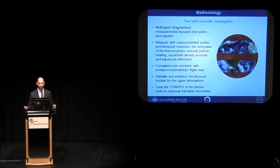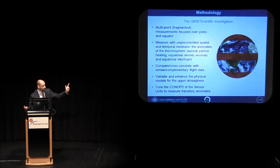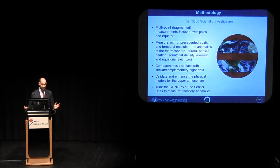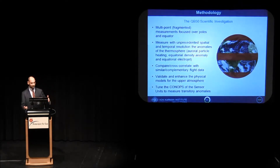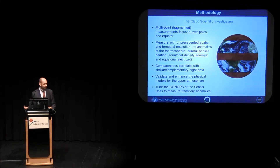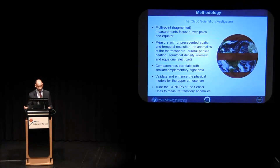What are the main scientific objectives of QB50? We are going to perform multipoint, distributed measurements at the equator and the poles. We will measure, with unprecedented spatial and temporal resolution, the anomalies in the thermosphere — for example aurora particle heating, equatorial anomalies, and the equatorial electrojet. We will be able to cross-correlate complementary flight data with other space missions and validate and enhance physical models of the upper atmosphere.